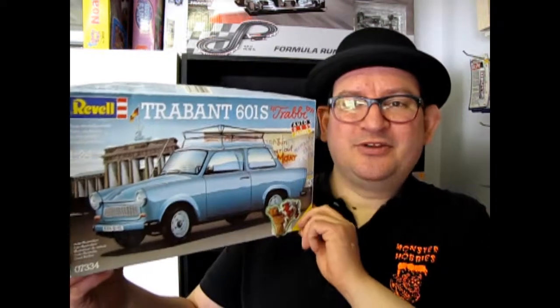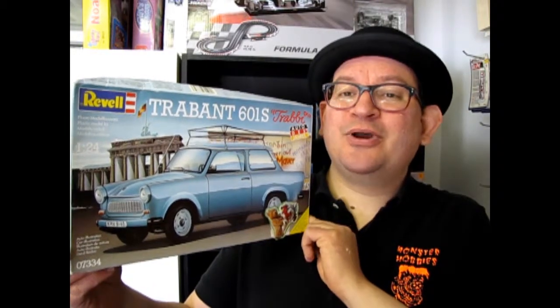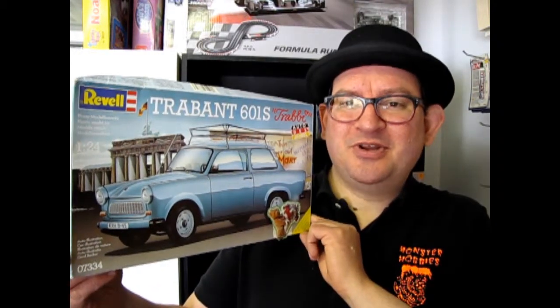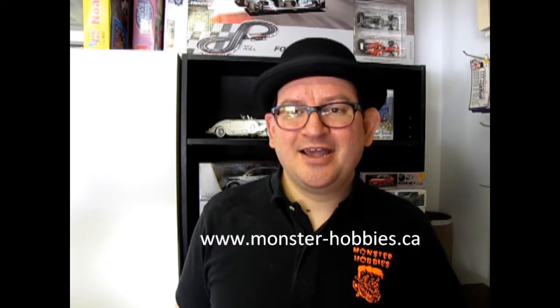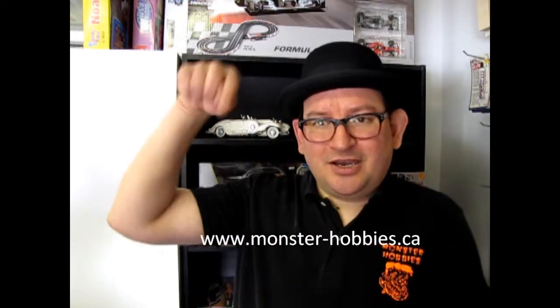Well, I hope you enjoyed that episode of Monster Hobby's What's in the Box, where we got to look at the Revell Germany Trabant 601S that was shipped all the way over from the former East Germany by my friend and old pen pal. So thank you, dear. And if you would like to see more of our model cars that are available at our web store, please check out www.monster-hobbies.ca. Like and subscribe to us here and click that notification bell. And check out these three other amazing videos. And until next time, we will see you when the wall falls.